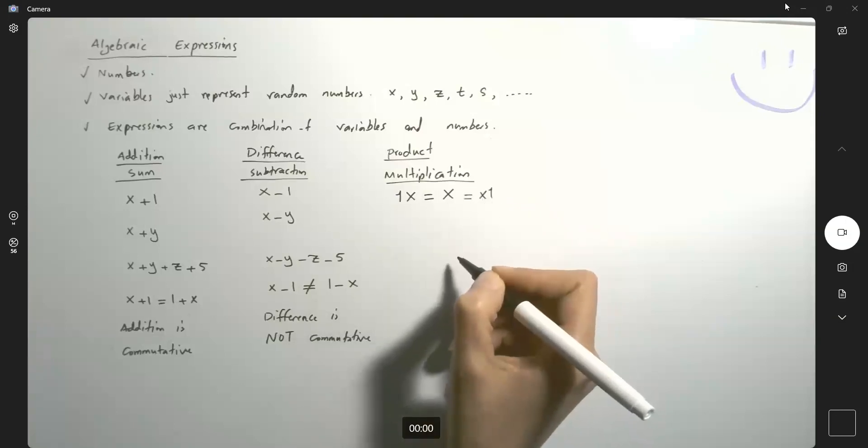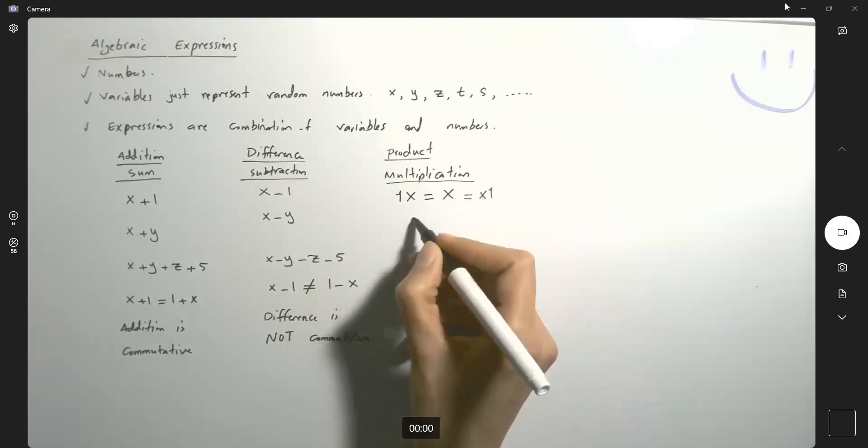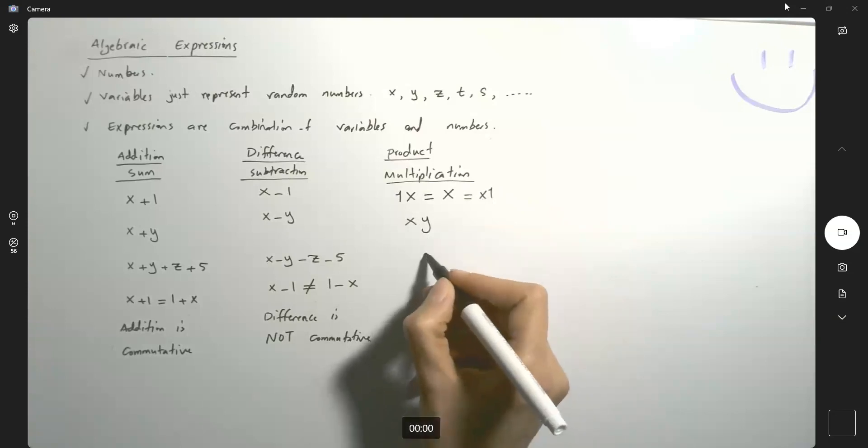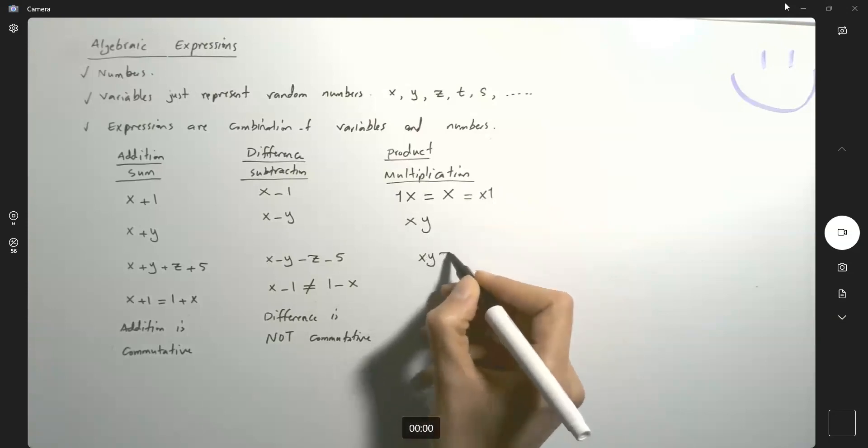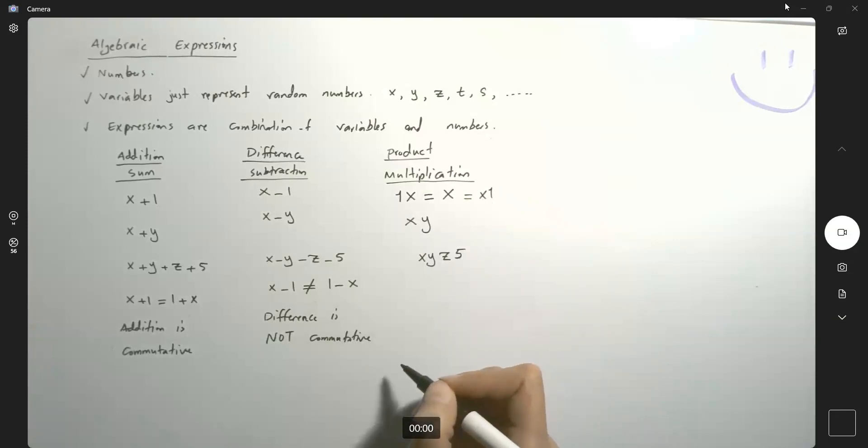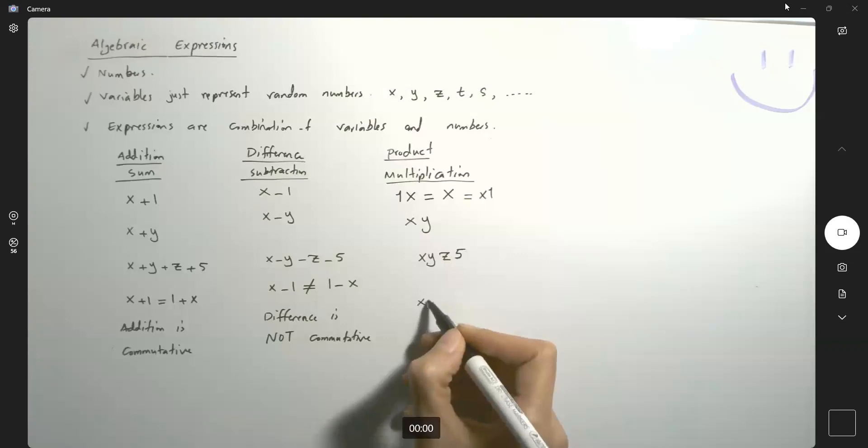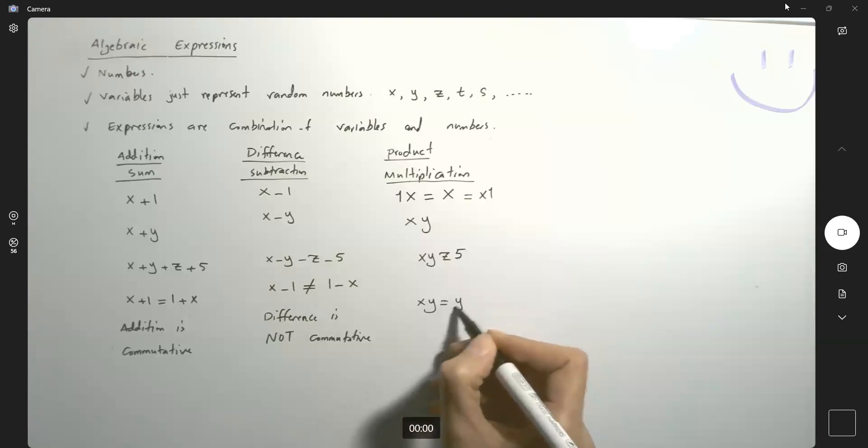And then you can multiply two variables, x times y. You can multiply many variables, x times y times z. You can multiply that by a number, five. So as I mentioned, multiplication or product is commutative. X times y is equal to y times x. There is no difference between them. So product or multiplication is commutative. It commutes both ways from left to right, from right to left.